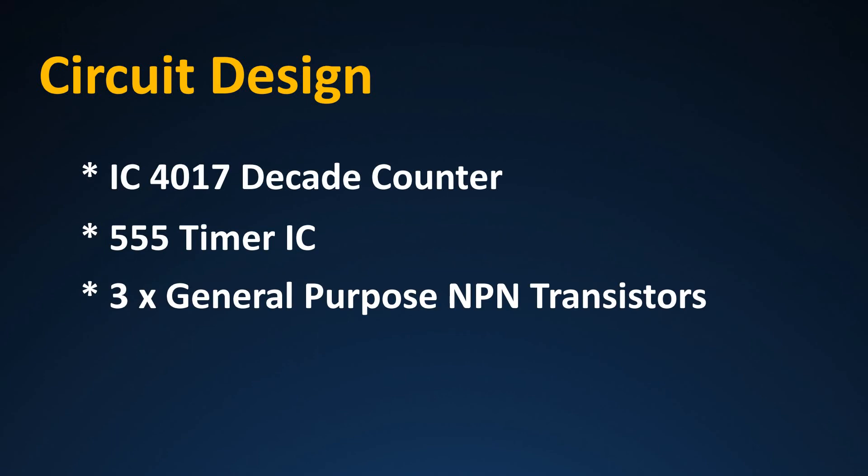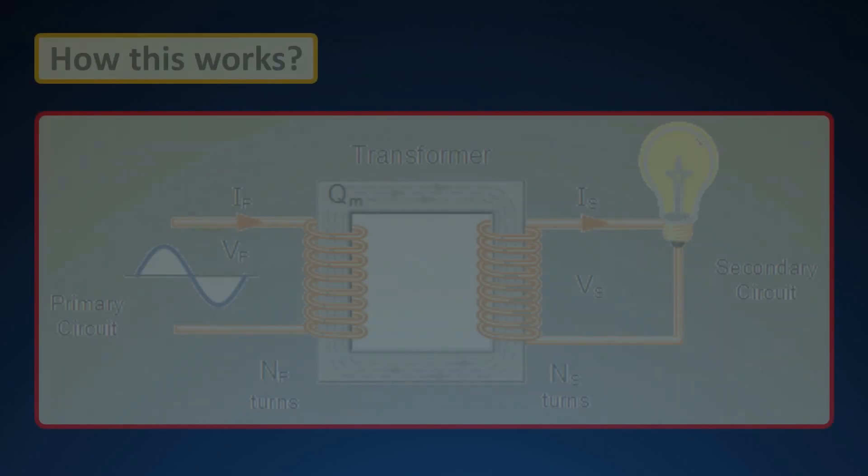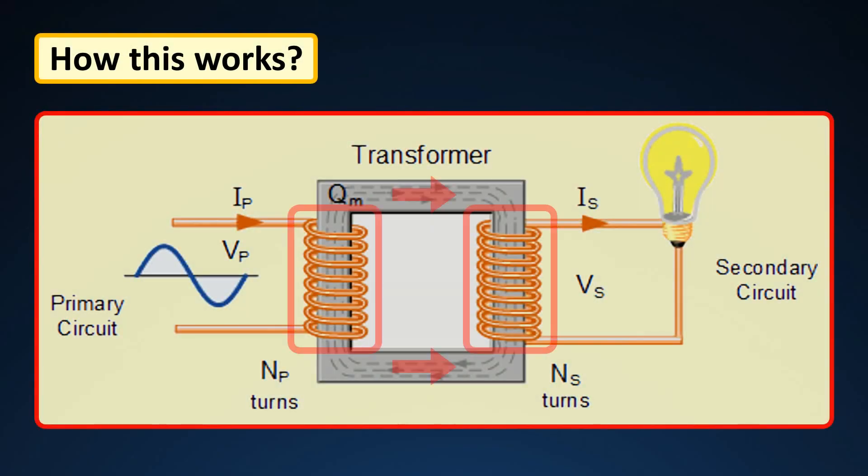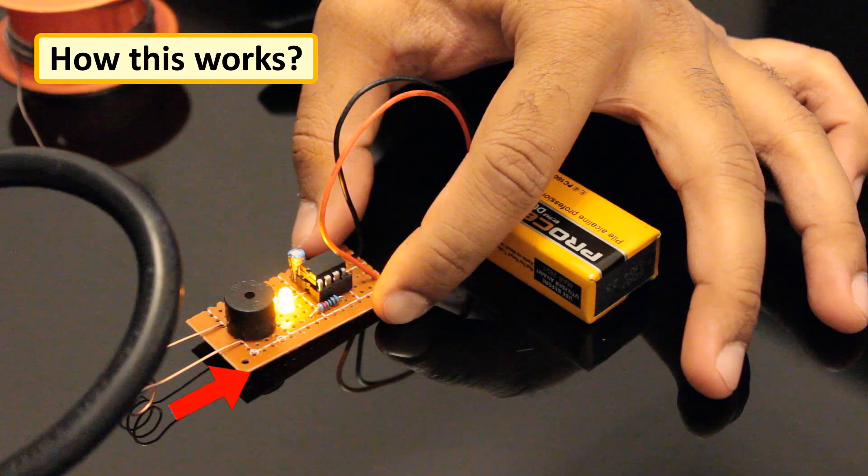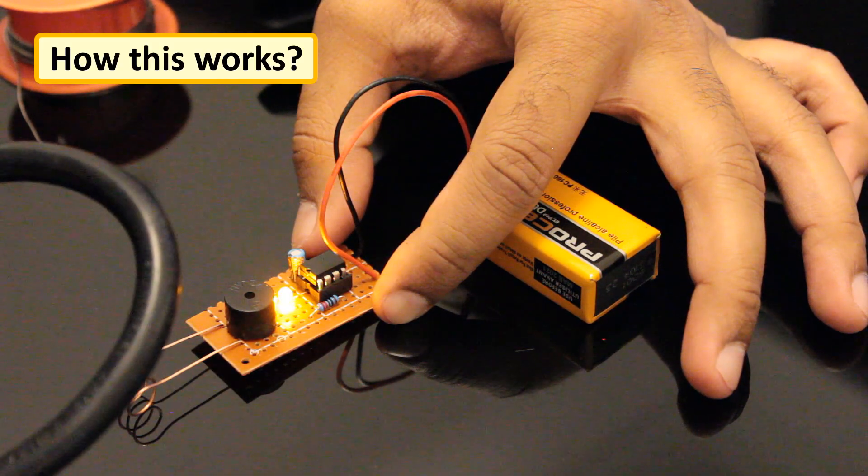All these voltage detectors work on a simple principle of electromagnetic induction. A magnetic field is produced around a current carrying conductor and if current through the conductor is alternating current, the magnetic field produced varies periodically. When we place an antenna near an AC energized object, a small current gets induced into the antenna due to electromagnetic induction.